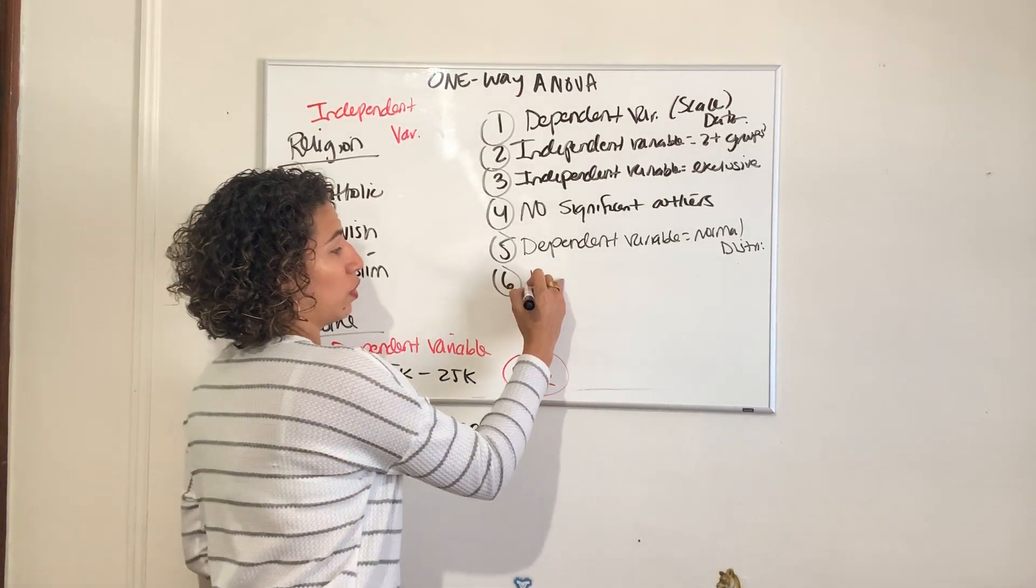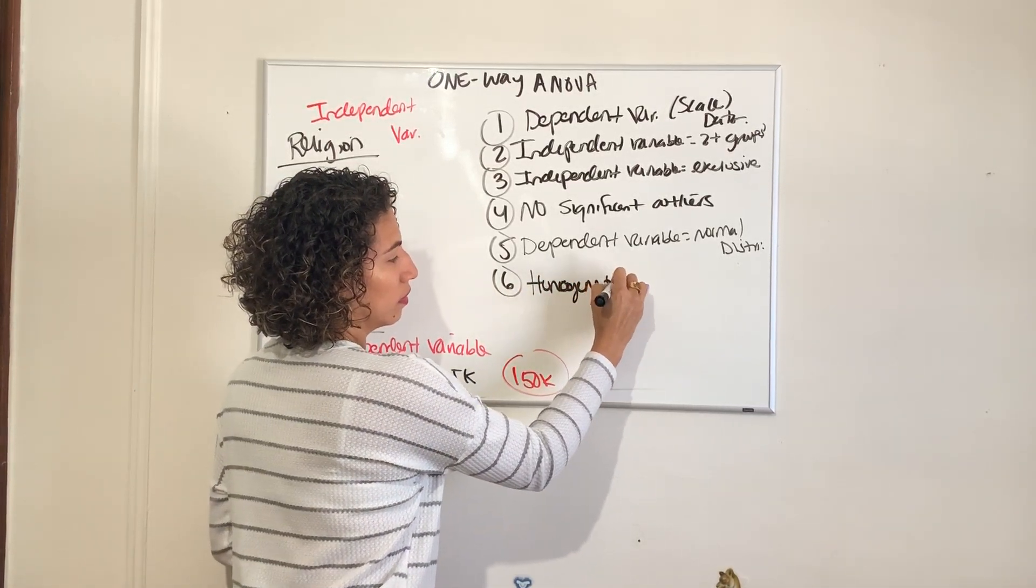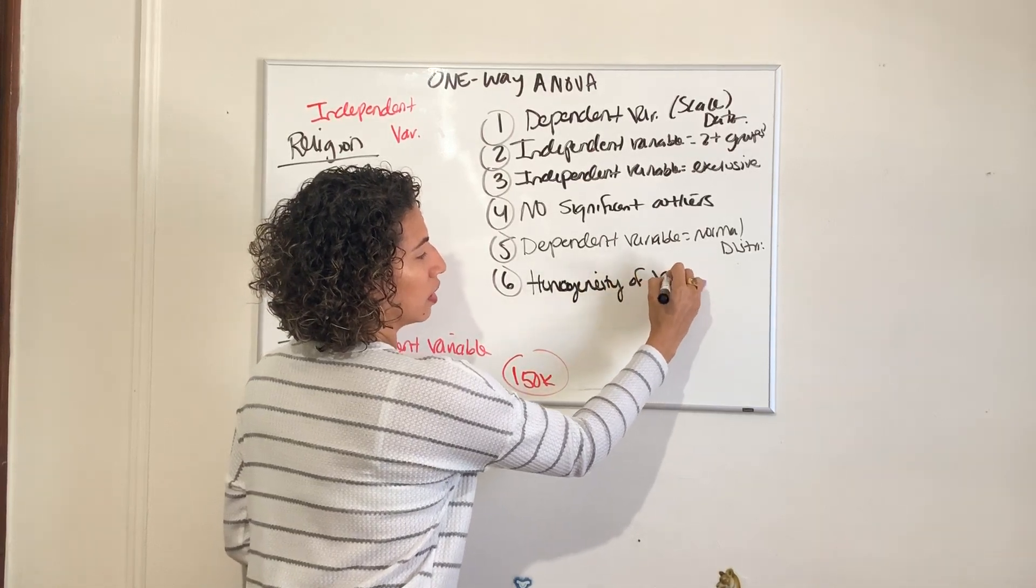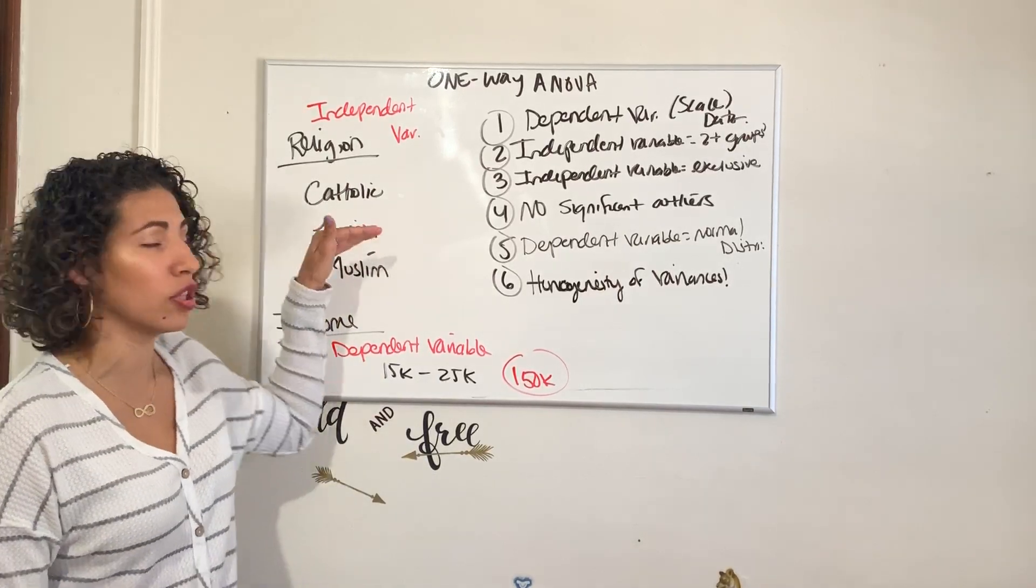Number six is the homogeneity of variances, meaning that the groups themselves should be internally the same.